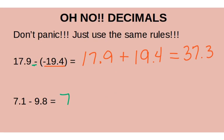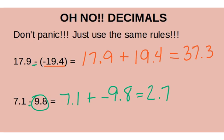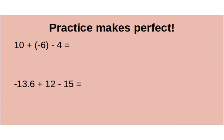Let's try the next decimal example: 7.1 minus 9.8. I don't want to subtract, so I change it to 7.1 plus negative 9.8. The signs are different, so I subtract: I get 2.7. The absolute value of 7.1 is 7.1, and the absolute value of negative 9.8 is 9.8. Since 9.8 is farther away, my answer is negative 2.7.